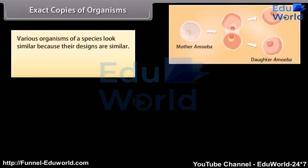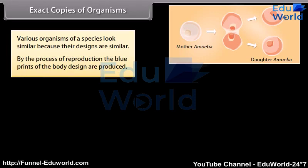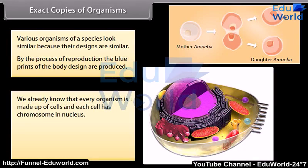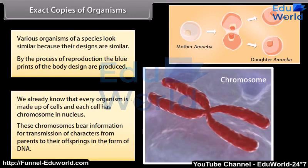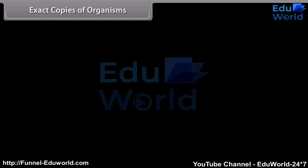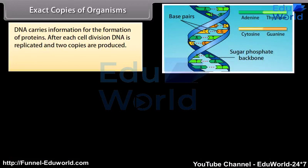Various organisms of a species look similar because their body designs are similar. By the process of reproduction, the blueprints of the body design are produced. Every organism is made up of cells, and each cell has chromosomes in the nucleus. These chromosomes bear information for transmission of characters from parents to their offspring in the form of DNA. DNA carries information for the formation of proteins.